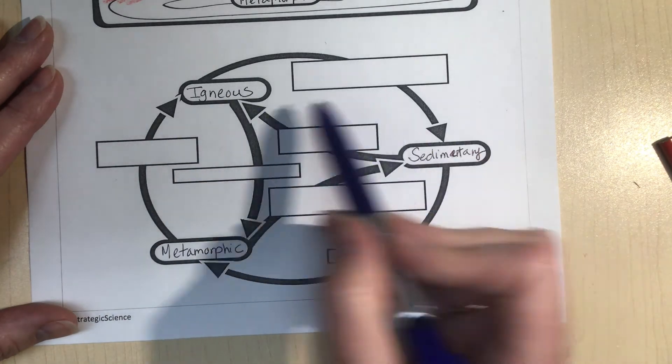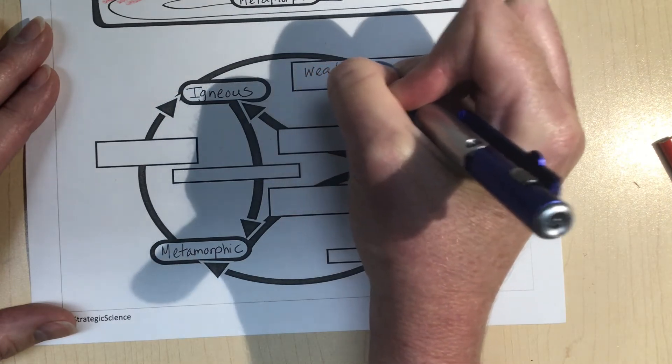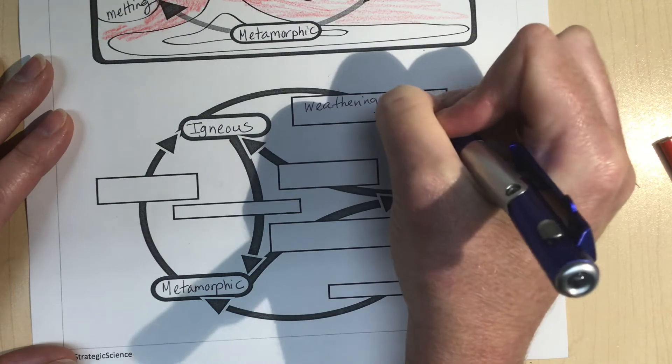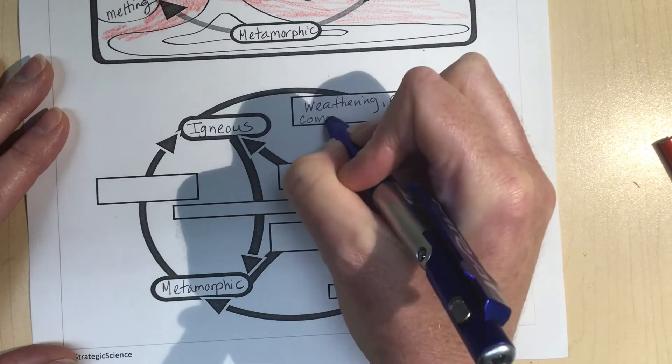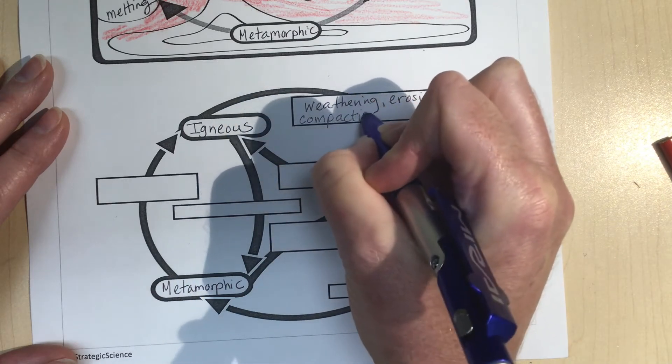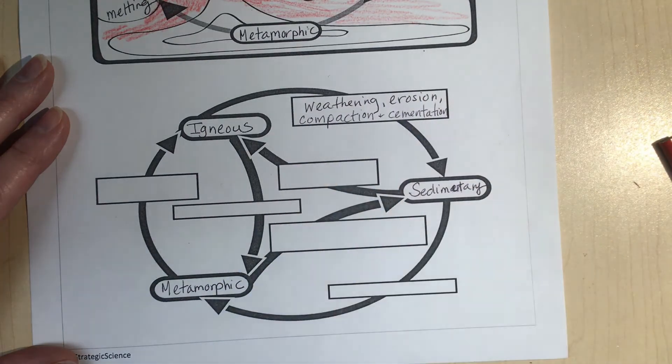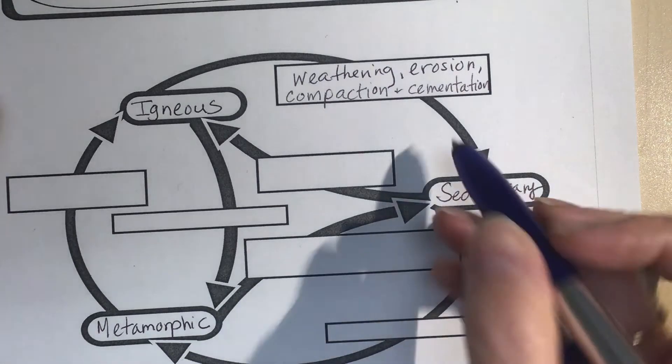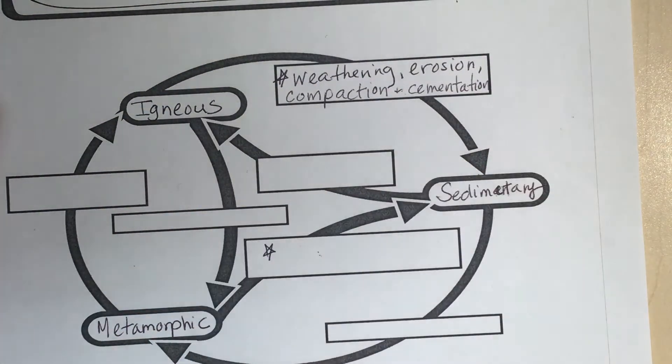So things get turned into sedimentary rock through weathering. Now up here I just put weathering and deposition, I didn't put all of it down, but you have erosion as well in there, and then compaction and cementation. That's part of deposition, so they're just more precise terms. So weathering, erosion, compaction, and cementation are the kind of more technical terms. And then the same thing happens here as here, so I'm going to put a little star that also occurs here so we don't need to rewrite it.